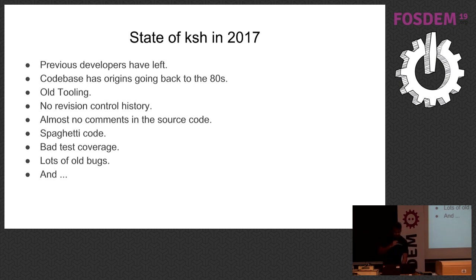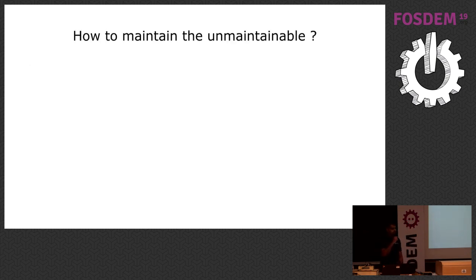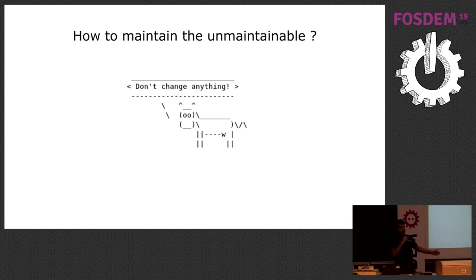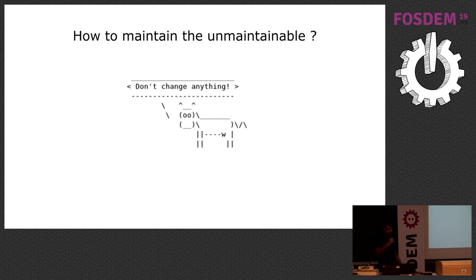How do you maintain the unmaintainable? The answer is very simple: don't change anything. Because the code is tricky and test coverage is bad — every time you attempt to make a bug fix, you will introduce new bugs. So don't change anything; do only critical bug fixes. If you care about stability, this approach sort of works in practice, because if you don't change too much code, there's very little chance of regressions. But this approach comes at a cost — it kills your software slowly.